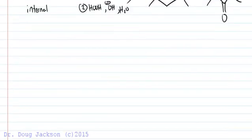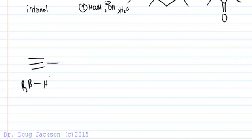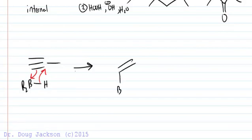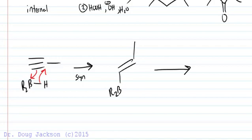Now what about the mechanism? Let's look at the terminal alkyne. Anti-Markovnikov: we put the more bulky substituent to the outside. The empty P orbital of boron accepts, and then we dump from the BH bond into a new CH bond, forming our first intermediate structure in a syn addition, which forces up the R group.